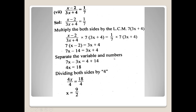Separate the variables and numbers — x variables کو ایک side پر اور numbers کو دوسری side پر۔ 7x minus 3x is equal to 4 plus 14, یعنی 4x is equal to 18. Dividing both sides by 4 — 4 اور 4 cancel، تو x is equal to 18 by 4, which simplifies to 9 by 2. تو x is equal to 9/2۔